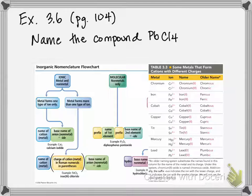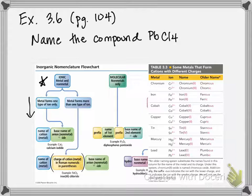For ionic compounds you have two choices. If the metal forms one type of ion only, we go this way. And if the metal can form more than one type of ion, we go this way.